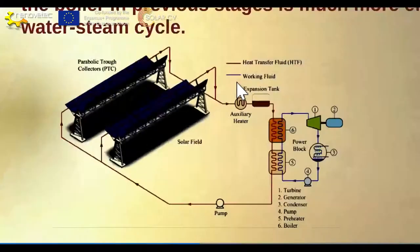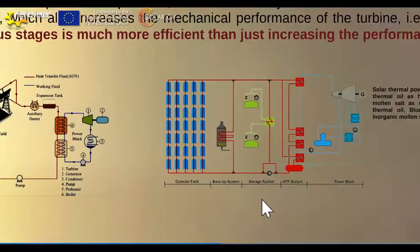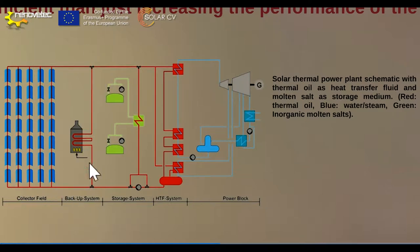Here you can see an example. The auxiliary boiler is located in the thermal oil circuit. Here is another example where the backup system — the auxiliary boiler — is located in parallel with the thermal oil circuit, in parallel with the mirrors.